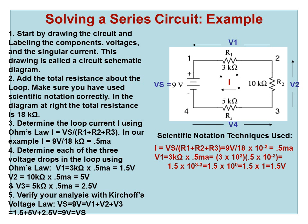Solving a series circuit, here's an example. Start by drawing the circuit and labeling the component voltages and the singular current. This drawing is called a circuit schematic diagram. Add the total resistance about the loop. Make sure you have used scientific notation correctly. In the diagram at right, the total resistance is 18 kilo ohms.